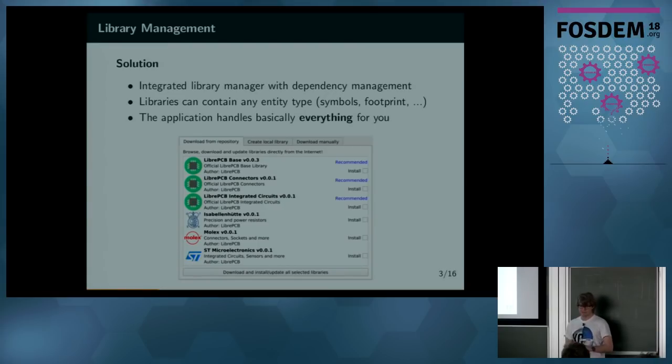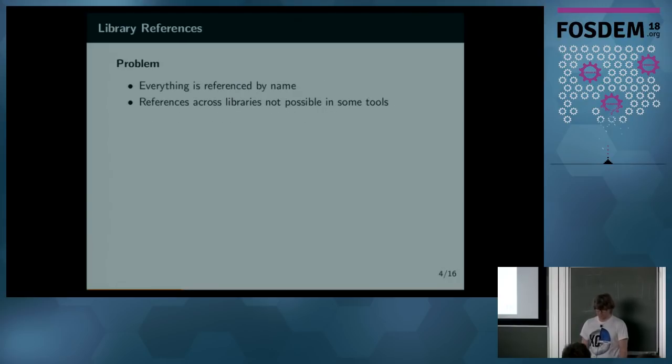So, my answer is, it doesn't have to be that complicated. So in LibrePCB, I integrated the library manager to update and install libraries. And it also has a simple library dependency management system. If you download a library A, which depends on library B, library B is automatically installed when you install library A. And probably the most important thing is the application basically handles everything for you. So, you don't have to care about libraries. They just work. Because there is no reason to make this very complicated.